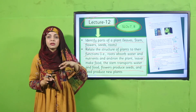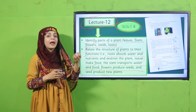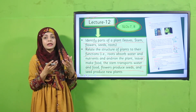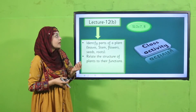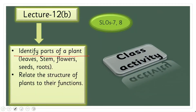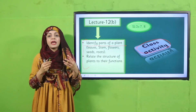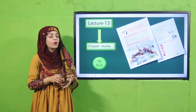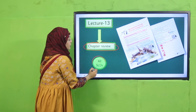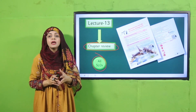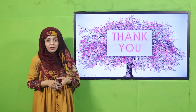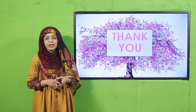In lecture number twelve, students will identify the parts of a plant and understand the different functions each part performs. Lecture number thirteen will be a complete chapter review where everything will be revised. At the end, you will be given an assessment on what you have learned from this unit. I hope you will learn a lot from this unit. Keep everybody around you safe, have a good day. Thank you so much, and Allah Hafiz.